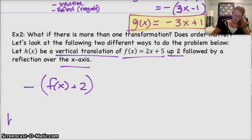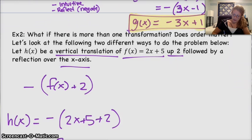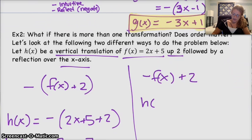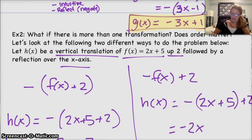In this case, you get h of x equals negative f of x, which is 2x plus 5, plus 2, which is negative 2x minus 7. Now, if you do it the other way, and perhaps maybe you did it like this instead, negative f of x plus 2, in this case, you get h of x is negative, negative 2x plus 5 plus 2, and that way you get negative 2x minus 5 plus 2, which is minus 3. You get two different functions.